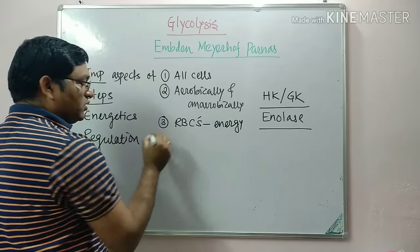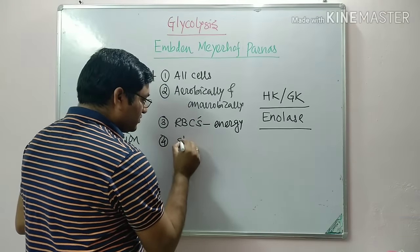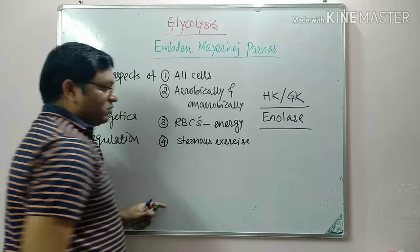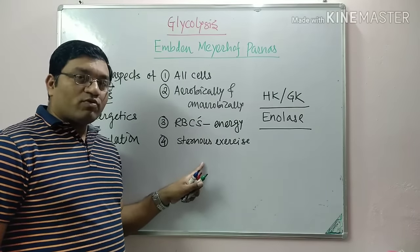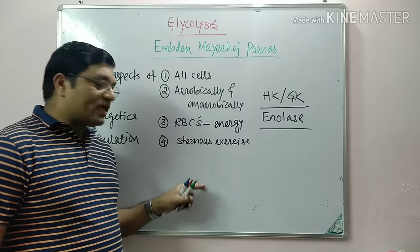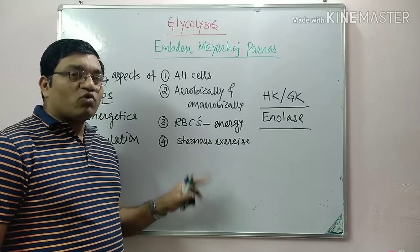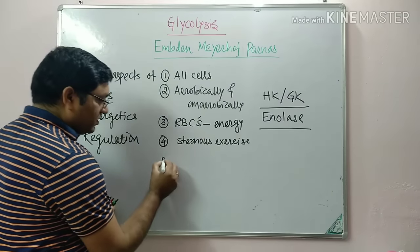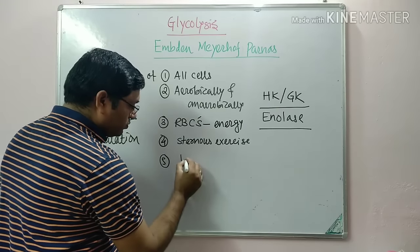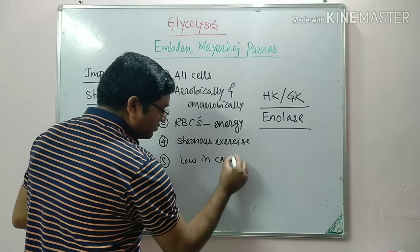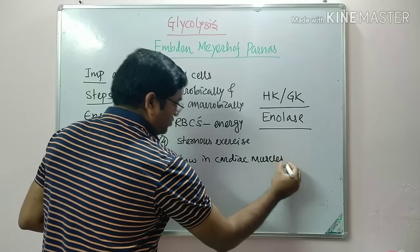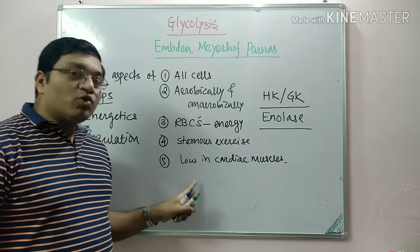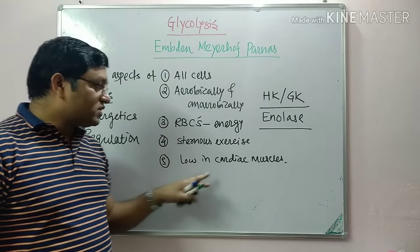Fourth, during strenuous or vigorous exercise, this pathway becomes important because oxygen demand increases but supply is low. The pathway then operates anaerobically and provides energy to the muscles during rapid exercise. Fifth, the activity of the glycolytic pathway is low in cardiac muscles. Therefore, whenever there is an ischemic attack, it has very poor prognosis due to the low activity of glycolysis in cardiac muscles.